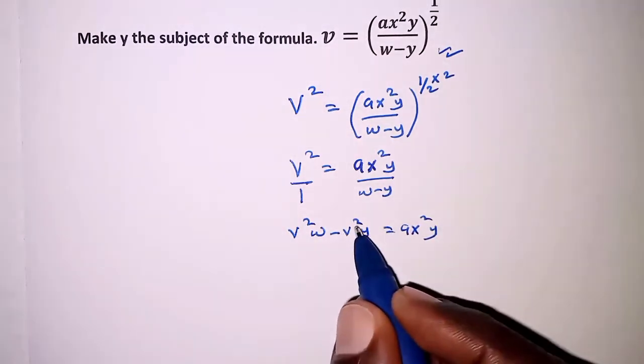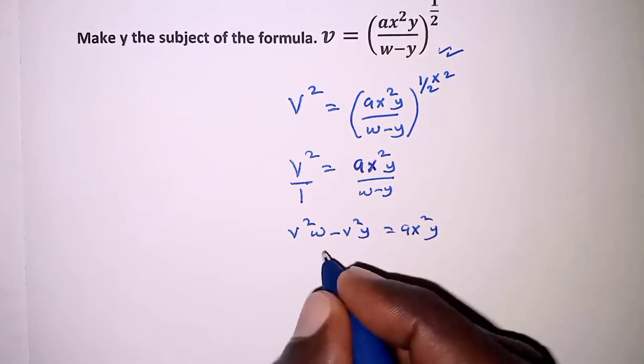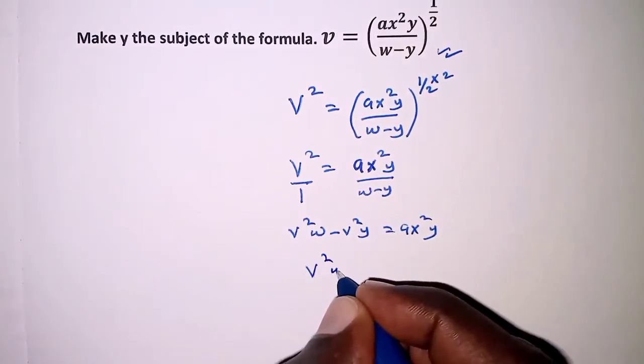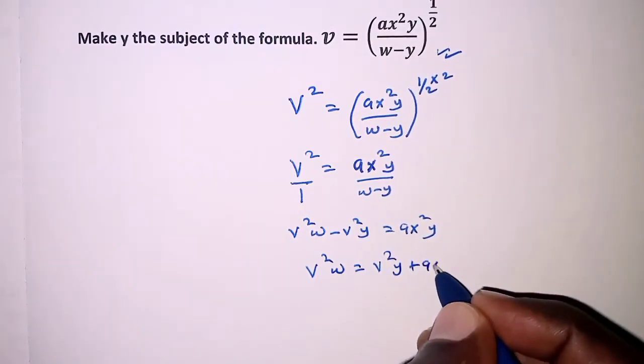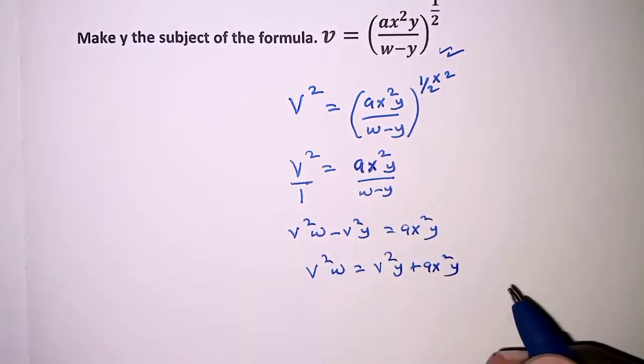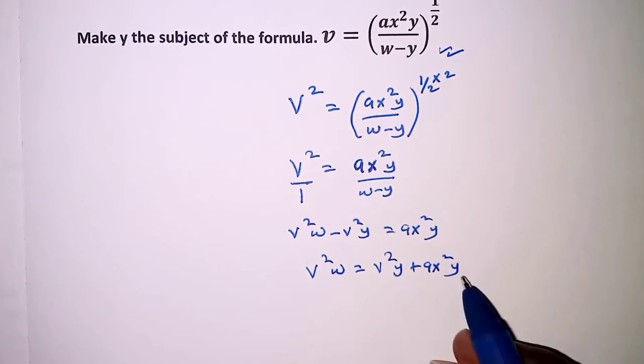Collecting the terms in Y, we'll have negative V squared Y crossing to the right hand side. So that is V squared W is equal to V squared Y plus ax squared Y. So on the right hand side we have Y common.